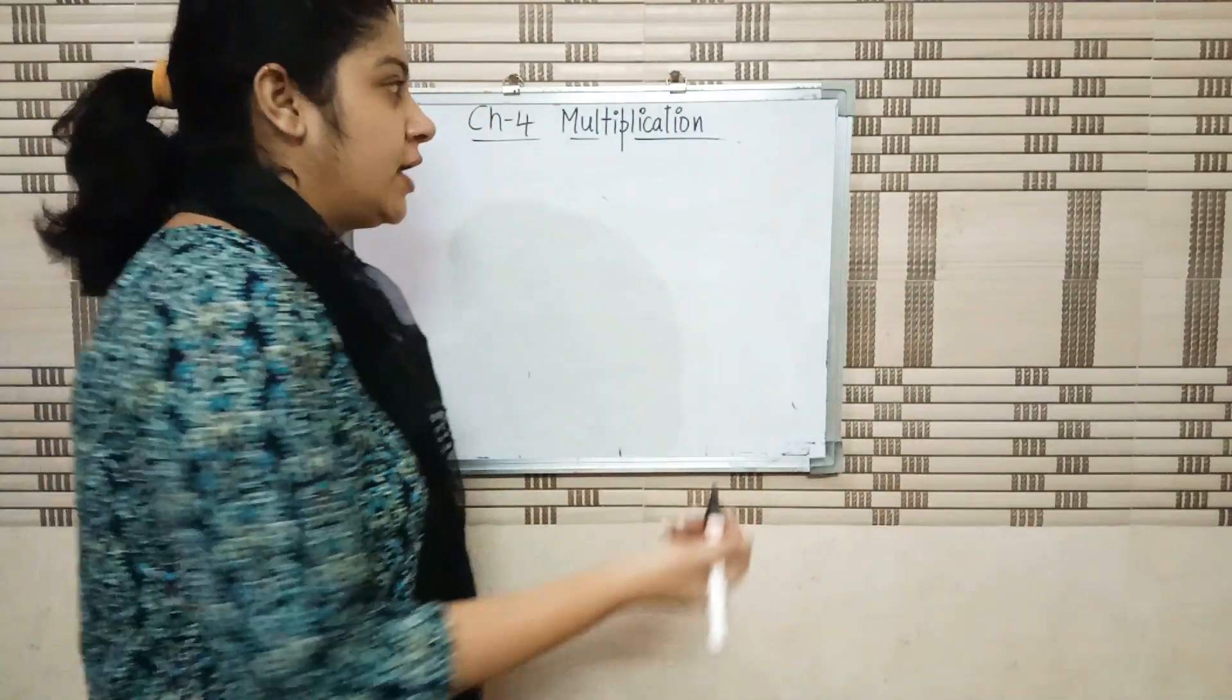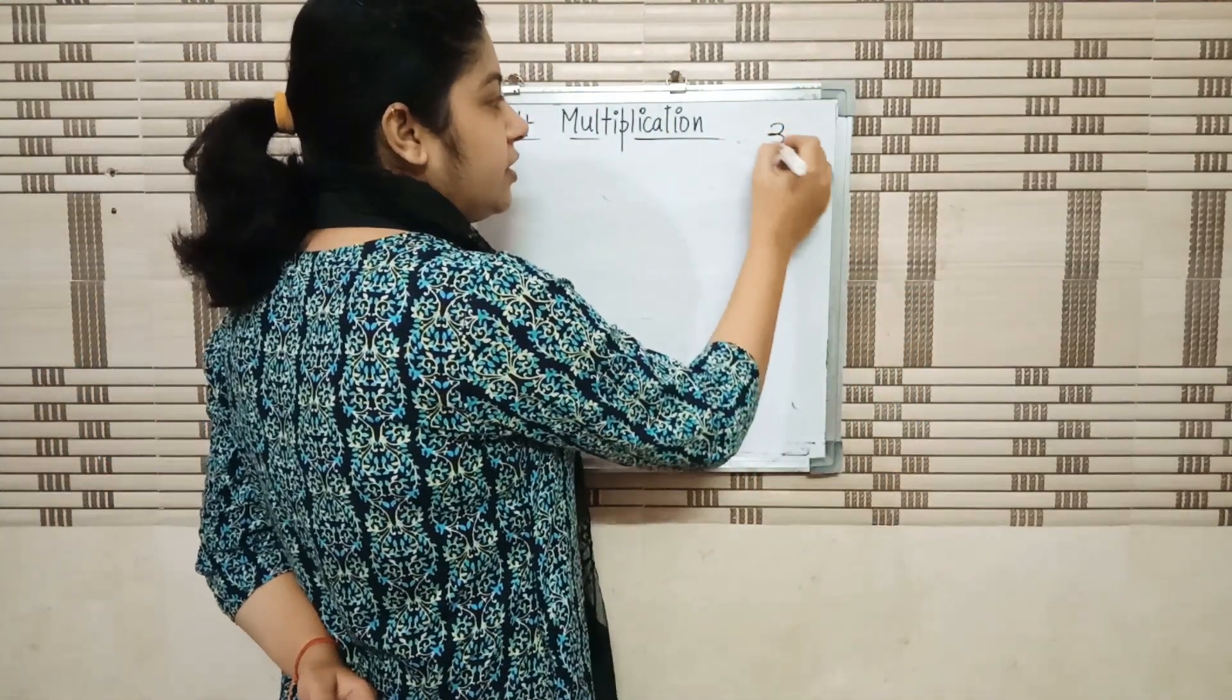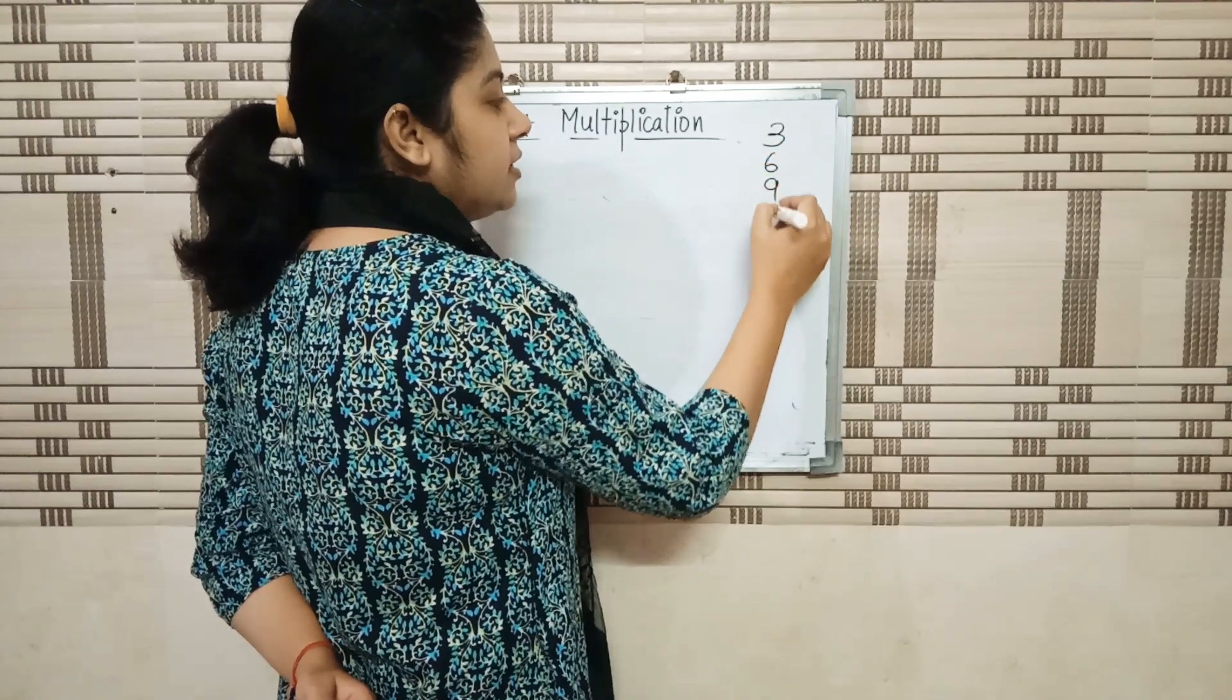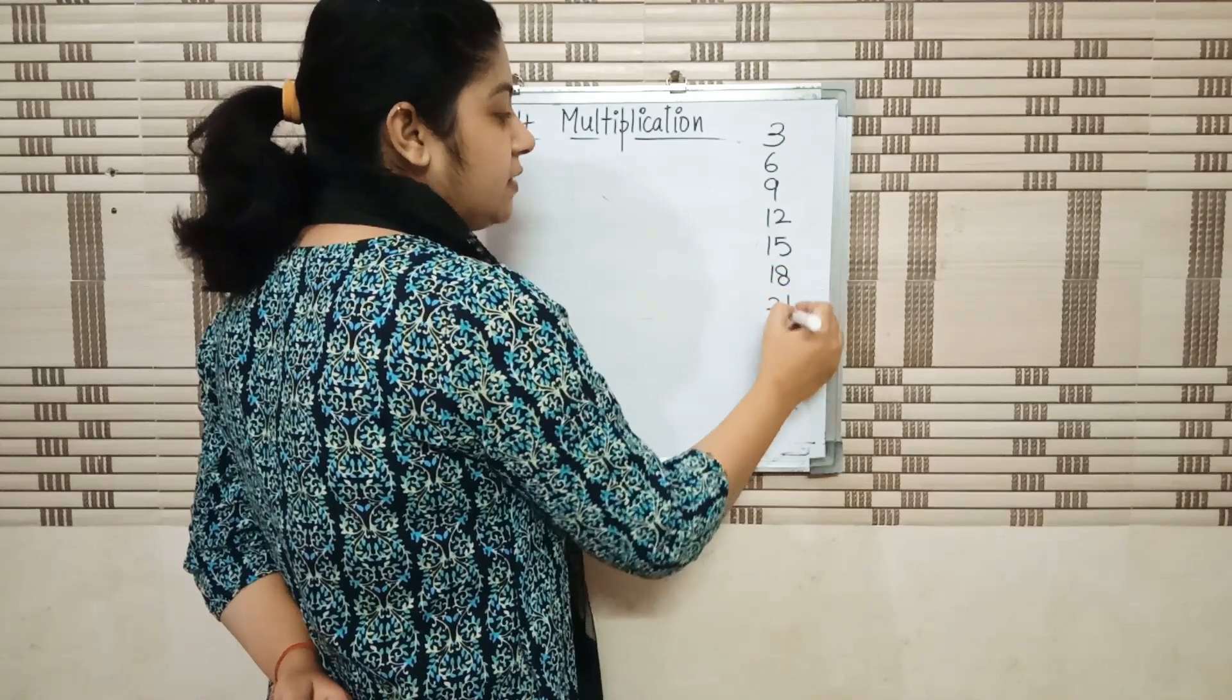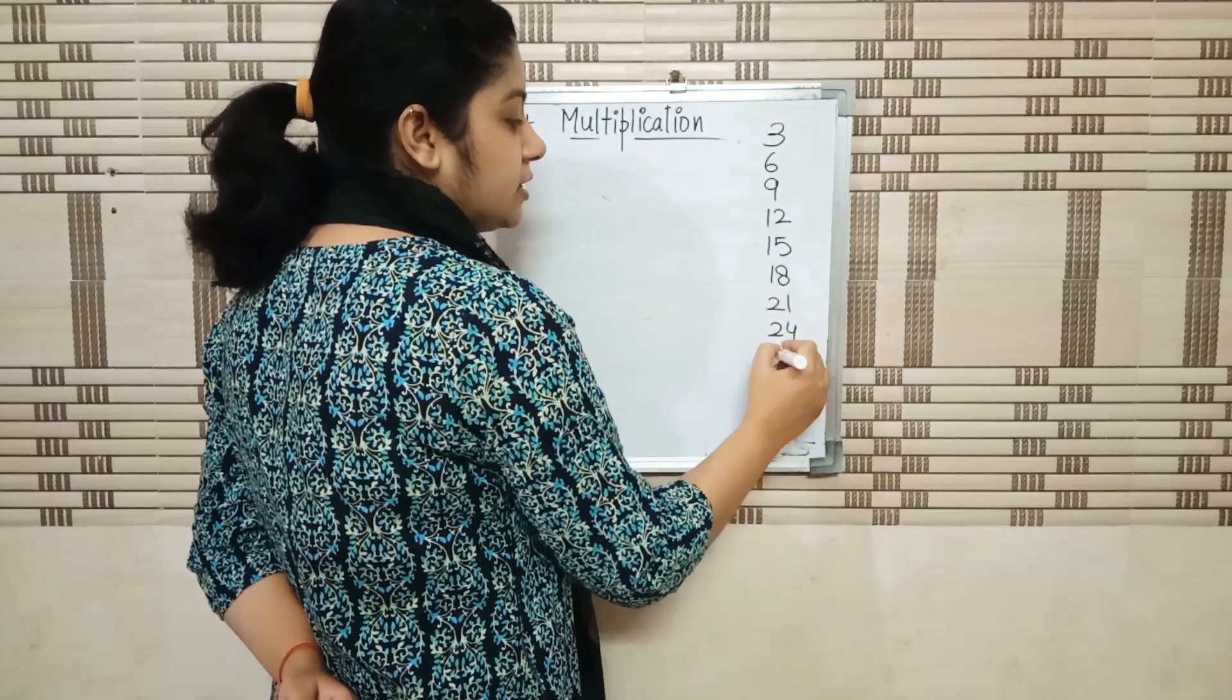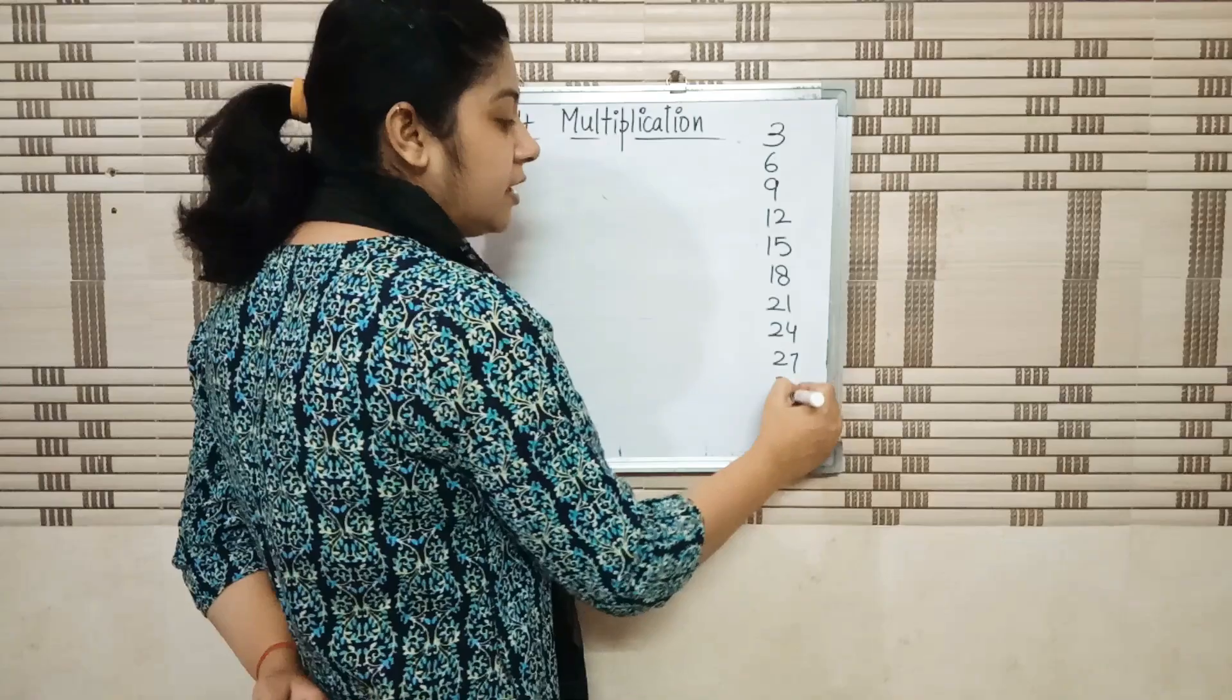You will come to a 3 table. So, 3 1s are 3, 3 2s are 6, 3 3s are 9, 3 4s are 12, 3 5s are 15, 3 6s are 18, 3 7s are 21, 3 8s are 24, 3 9s are 27, 3 10s are 30.